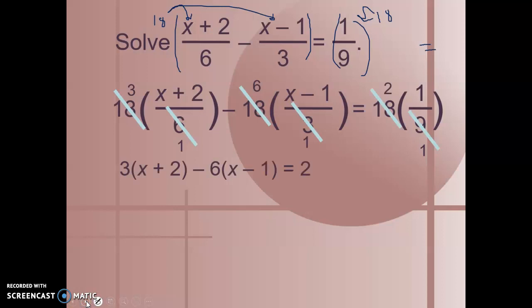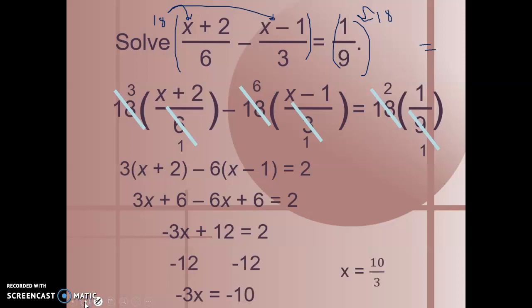Now we have this because we've eliminated our denominators. What we need to do at this point is distribute, combine my terms, and then solve for x. And when we do that, we get x equals 10 over 3.